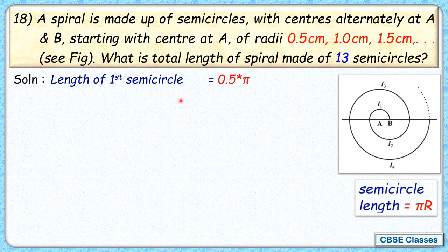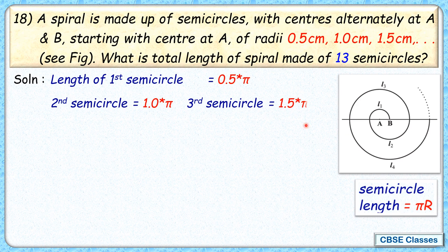Same way, the second semicircle has radius of 1 centimeter, so its length will be 1π. For the third semicircle, the length will be 1.5π, where 1.5 is the radius. And so on till the 13th semicircle. The 13th semicircle radius will be 0.5 times 13, that is 6.5π.